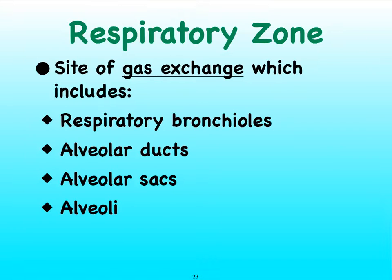In my previous video, when I discussed the bronchial tree, I did include all of the bronchioles and even the alveoli. Bear in mind that some of those structures, particularly the alveoli and the bronchioles that we refer to as the respiratory bronchioles, they might be part of the bronchial tree, but they are actually part of our respiratory zone. So once the bronchioles are switched over to what we call respiratory bronchioles, gas exchange can begin to occur. The last bronchioles where gas exchange does not occur are called the terminal bronchioles.